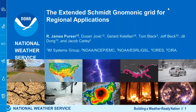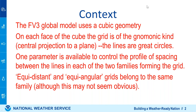My collaborators are Dushan Jovic, Gerard Catafin, Tom Black who recently retired, Jeff Beck, Julie Dong, and Jacob Carley. The context is that we have the FV3 global model which uses the cubic geometry, and we want a regional model that uses the same kind of map transformation as much as possible.